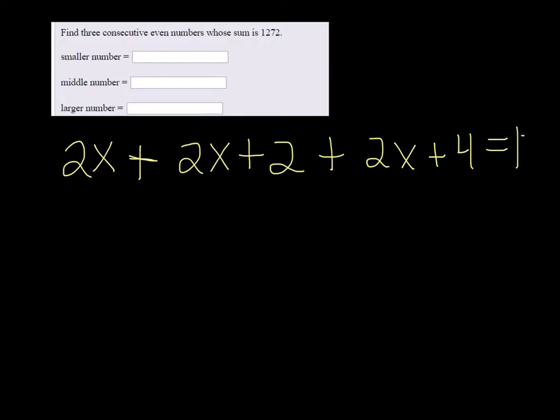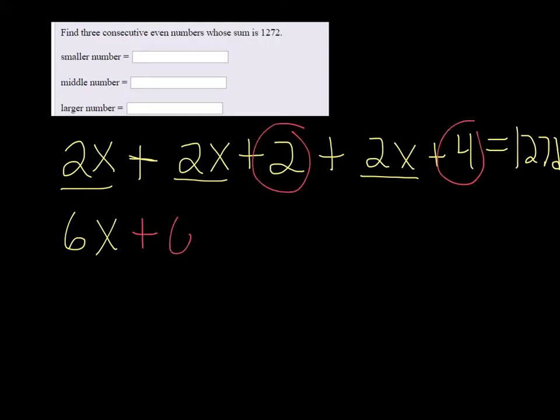And this is all going to equal 1272. So if we combine the like terms, we get 6x and then 2 and 4 is 6. That's going to equal 1272.